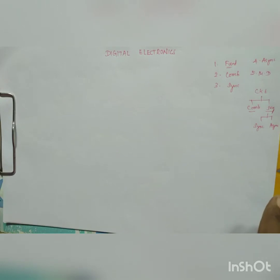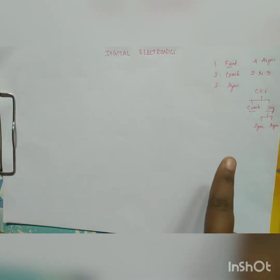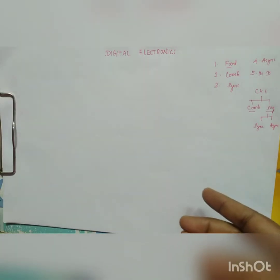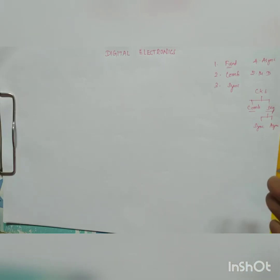In a combinational circuit, we don't need any memory elements. But if it is sequential, our present input plus previous past history outputs are checked, so we need a memory element by default. That memory element is flip-flops and latches.